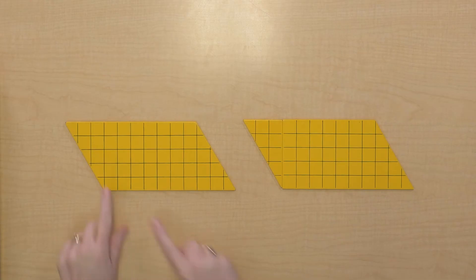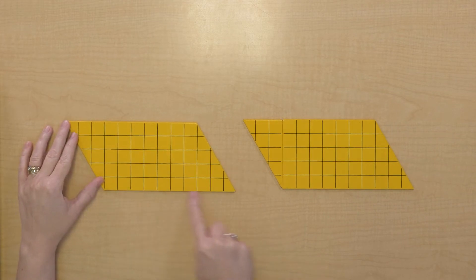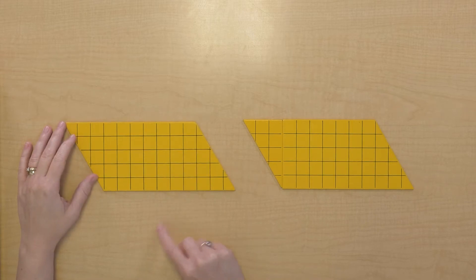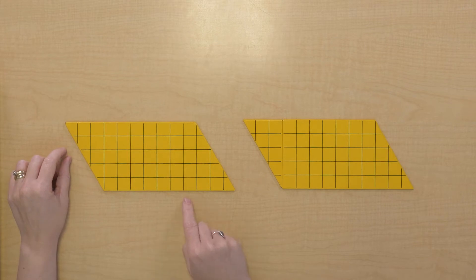Today we're going to take a look at measuring the area of a parallelogram. If I look at my whole parallelogram here, I see I've got the base and I can find the height, but is it easy to just count the squares on this one? It isn't, is it, because a lot of the squares are cut off.